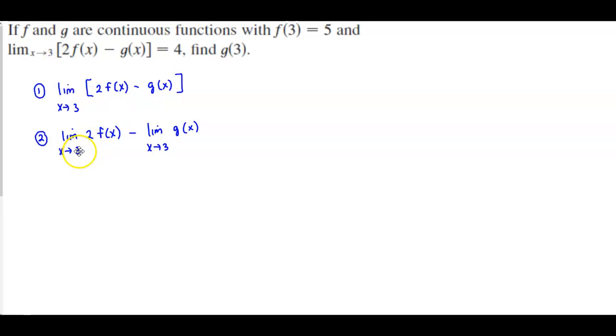So now let's evaluate this function as the limit is approaching 3. That means the inputs are going to become 3. So that means this now becomes 2 times f(3) minus g(3).